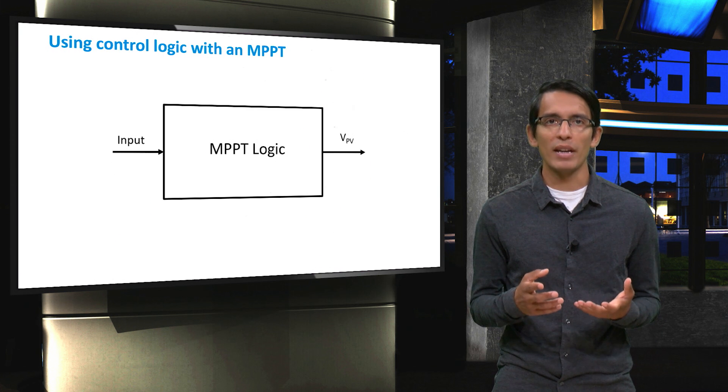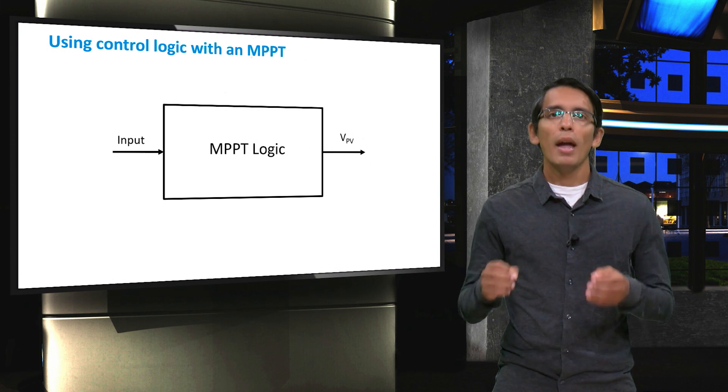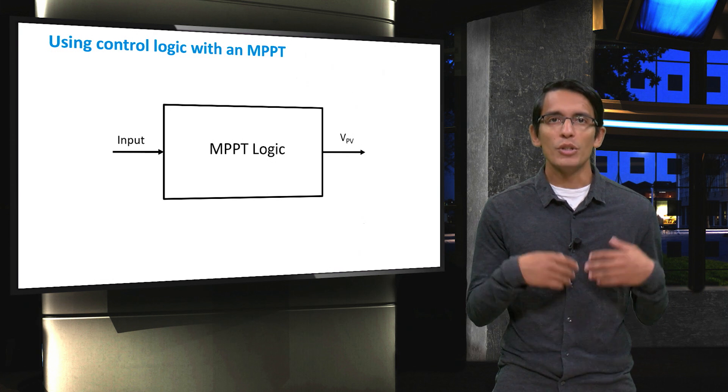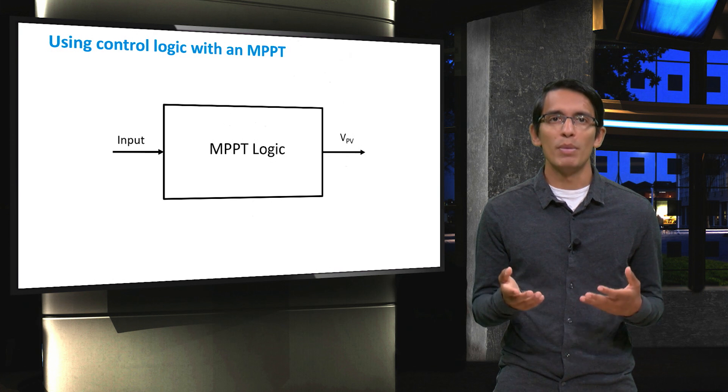A maximum power point tracking scheme consists of taking some sort of input and using some logic based on that input and outputting VPV, which the power electronics should apply to our PV panels.